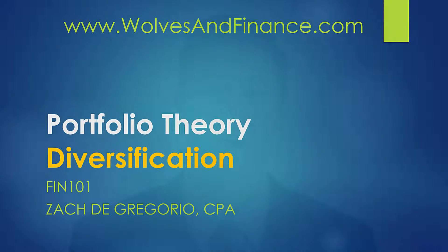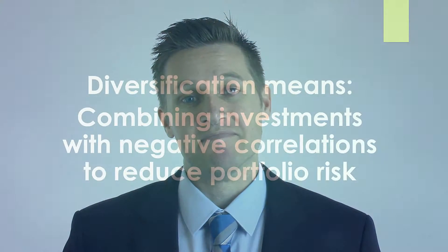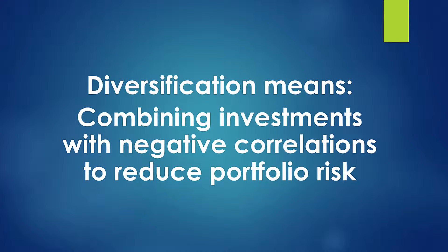In this video we're going to continue talking about portfolio theory and specifically we're going to talk about diversification. I want to give you a really firm definition of diversification because not a lot of people know what it actually means. Some people think it's just investing in different areas, but it's a little bit more specific than that. Here's the definition: diversification is combining investments together with negative correlations to reduce portfolio risk.